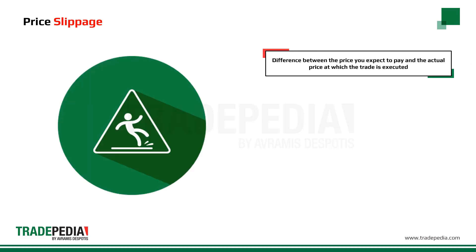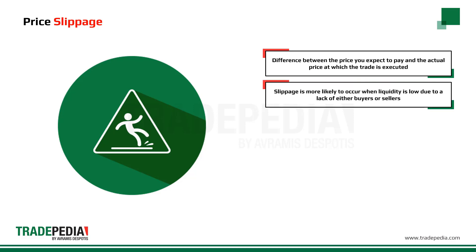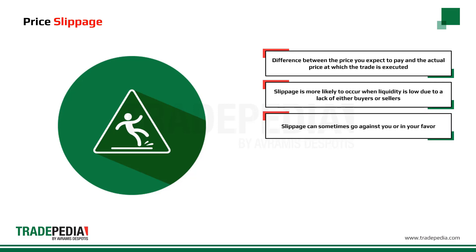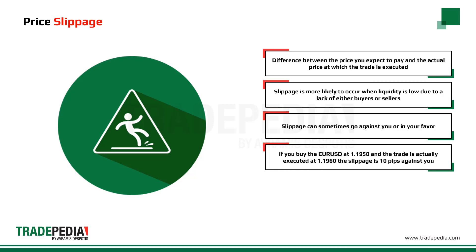Slippage is the difference between the price you expect to pay and the actual price at which the trade is executed. Slippage is more likely to occur when liquidity is low, for example during news events, due to a lack of either buyers or sellers. Slippage can sometimes go against you or in your favor. If you place a trade to buy the EURUSD at 1.1950 and the trade is actually executed at 1.1960, the slippage is 10 pips against you.